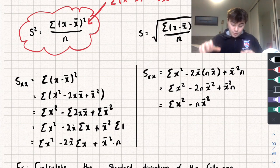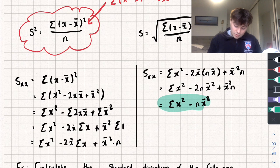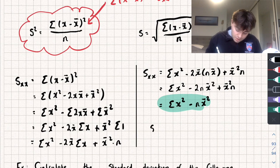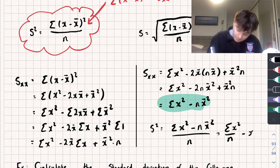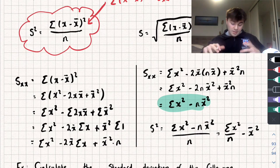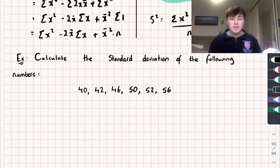This should now be a form you're familiar with. Substituting this new expression for Sxx into our variance formula, we get that the variance s-squared equals the sum of x-squared minus n times x-bar squared, all divided by n. That can be written as the sum of x-squared over n, subtract x-bar squared. That's where that alternative formula comes from.